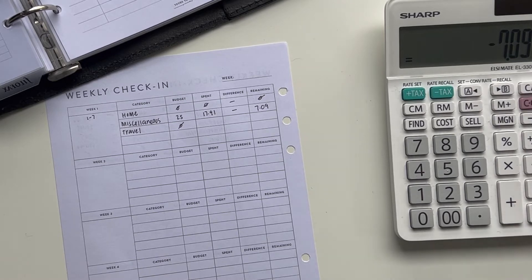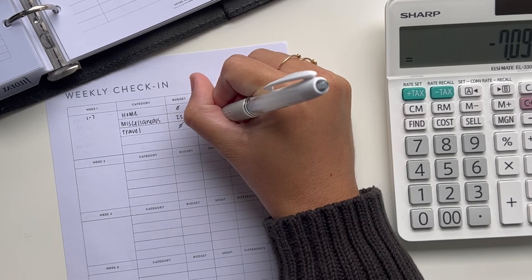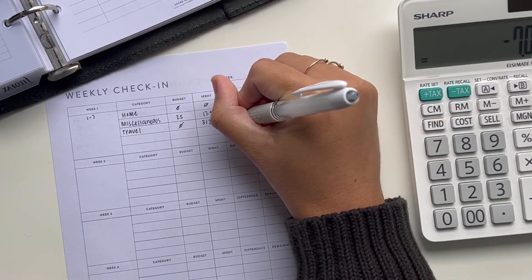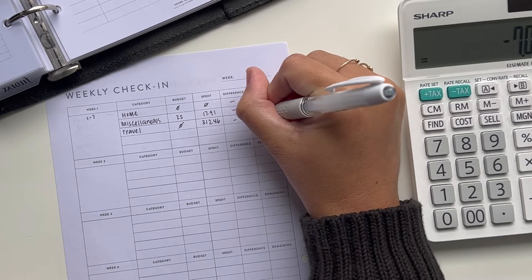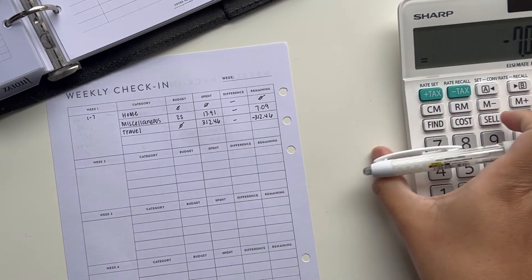And then travel, I didn't budget anything for travel, but we are going to Charlotte in September for a golf thing, and we finally booked our flights, but I did spend $312.46, which means I am $312.46 over budget in the travel category.